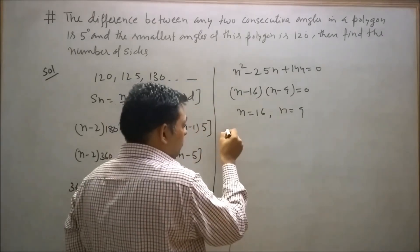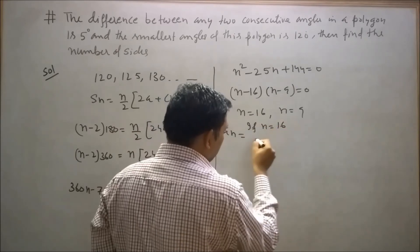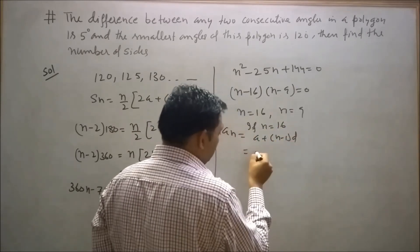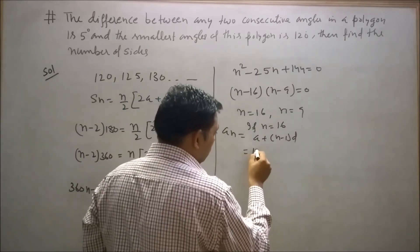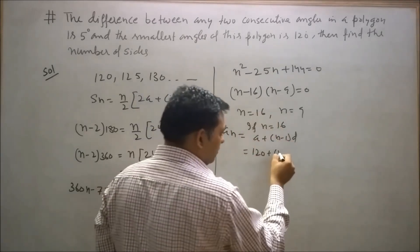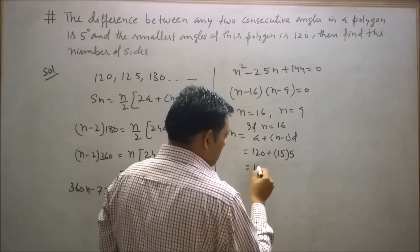Now find aₙ if n = 16. aₙ = a + (n-1)d, where a is 120. So 120 + (16-1) × 5 = 120 + 15 × 5 = 120 + 75.